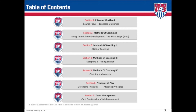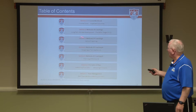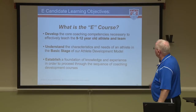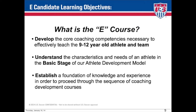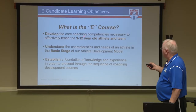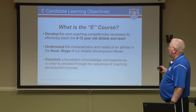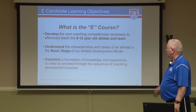Tonight we are going to focus on Methods of Coaching 1 and Methods of Coaching 2, and all the rest we will do over the weekend in the classrooms. What is the E license? It's a license about the 9 to 12 year old — that's the age span we're going to look at. We're going to look for developing core coach competencies to work with this group and understand the characteristics and needs of this basic stage of the athlete development model.